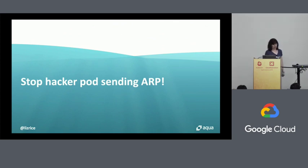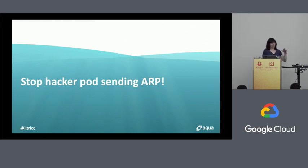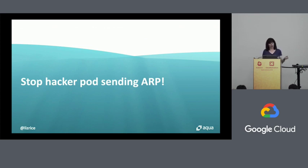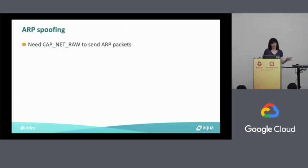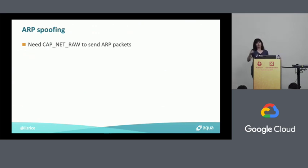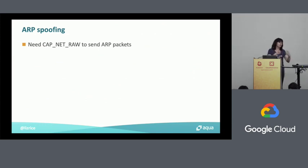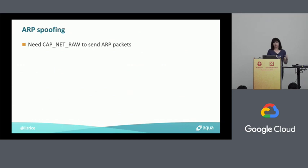The best way to prevent this is to stop the hacker pod from being able to populate information into the ARP table, and you can do that by preventing it from opening raw network sockets — essentially the CAP_NET_RAW capability. CAP_NET_RAW is one of a set of Linux capabilities that give fine-grained privileges inside the Linux kernel. To send normal IP traffic you don't need special capabilities, but if you want to open a raw socket and send packets directly at the Ethernet level, you need CAP_NET_RAW.